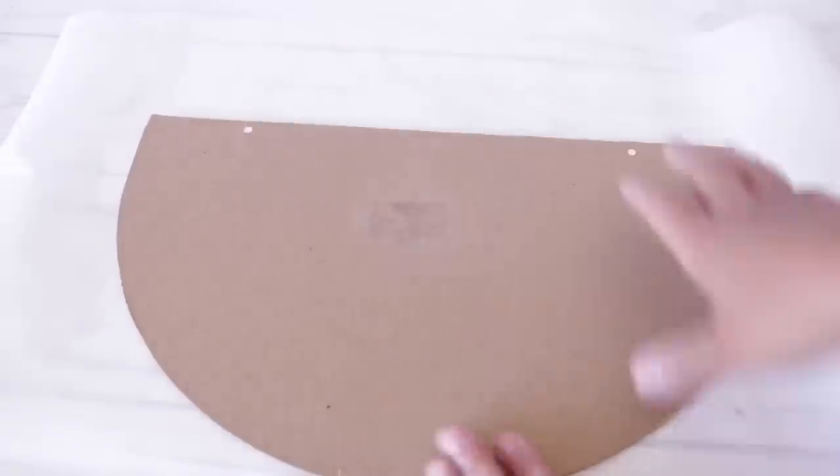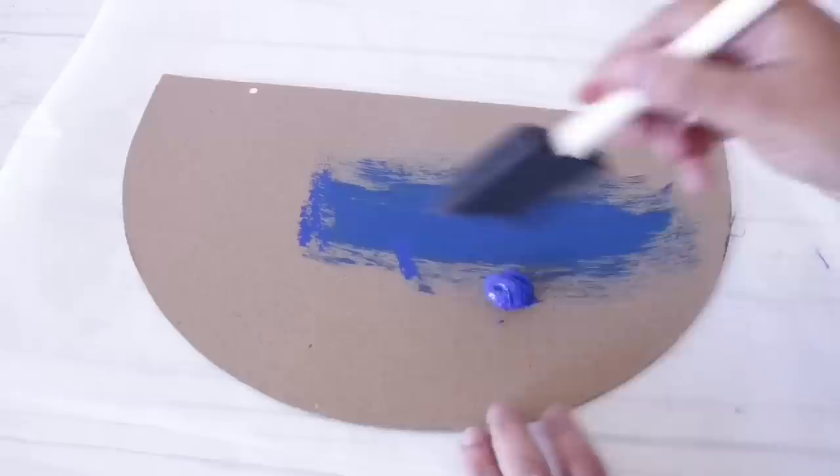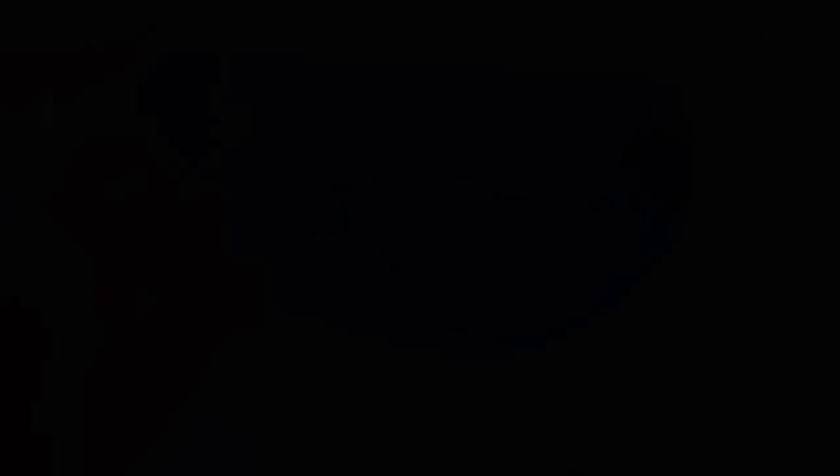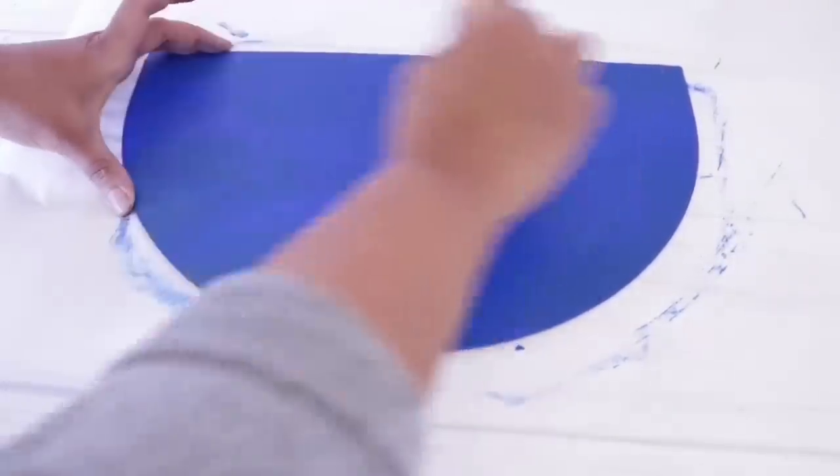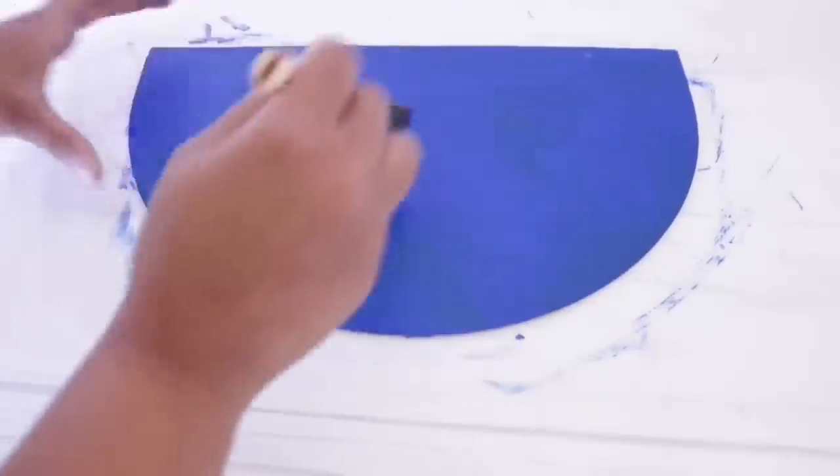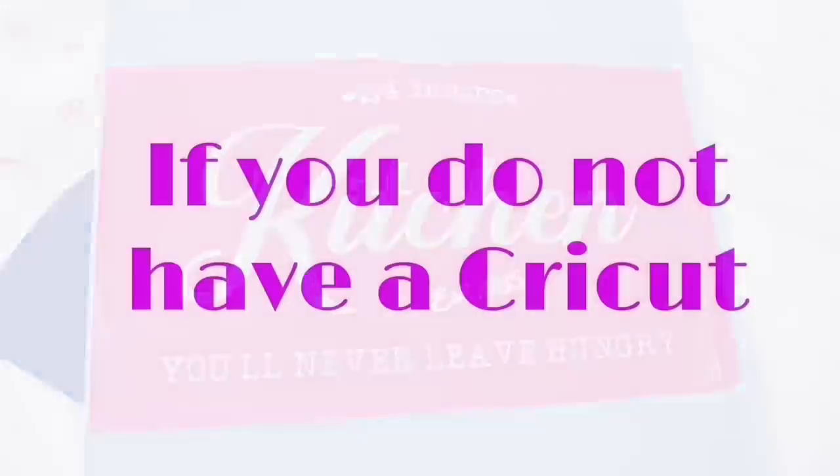Once that's completely dry I'm going to flip it over, make sure that my little areas are dry and then I'm going to cover this using cobalt blue. You can use whatever shade of blue you want, this is a little bit more vibrant than the original but I really love this shade. I did three coats of this cobalt blue and I let it dry really well between coats.